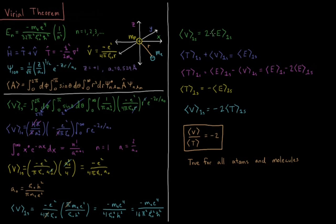Now we can derive the rest, because the total energy is just the potential plus the kinetic energy. So the kinetic energy equals the total energy minus the potential energy, or the total energy minus 2 times the total energy. So the kinetic energy is equal to the negative of the total energy, or the potential energy equals negative 2 times the expectation value of the kinetic energy.